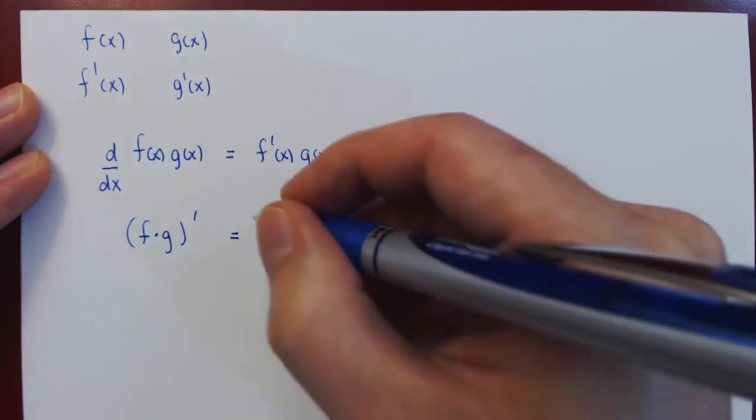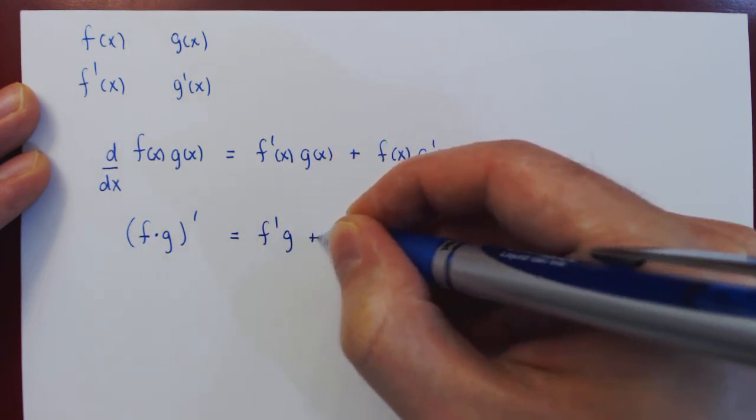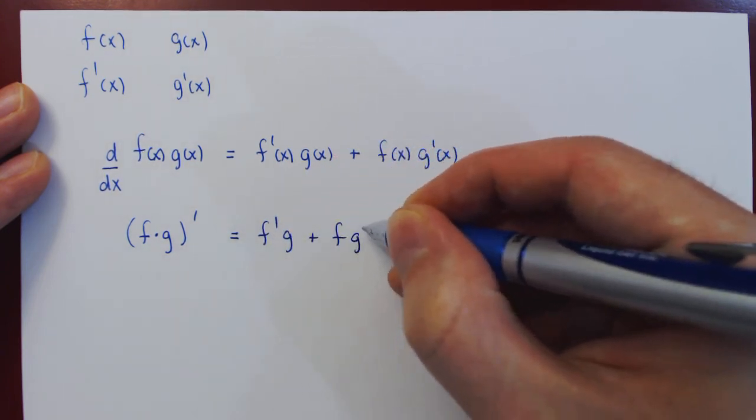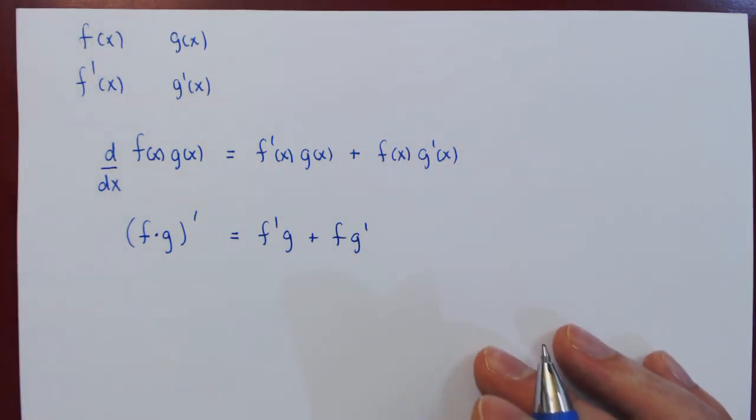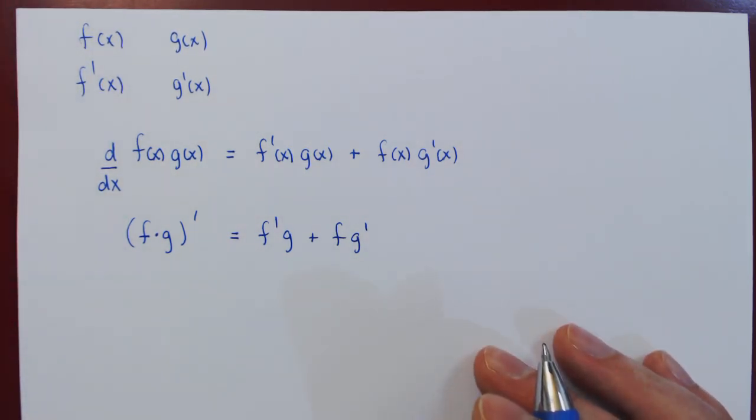Well, f prime times g, plus f g prime. And that's the product rule of differentiation.